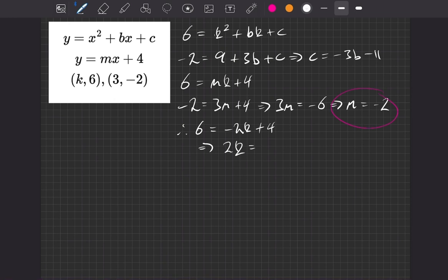Well, 2k, if we add the 2k to both sides, and if we take 6 as well, what do we get? We get minus 2. So overall, k is equal to minus 1.